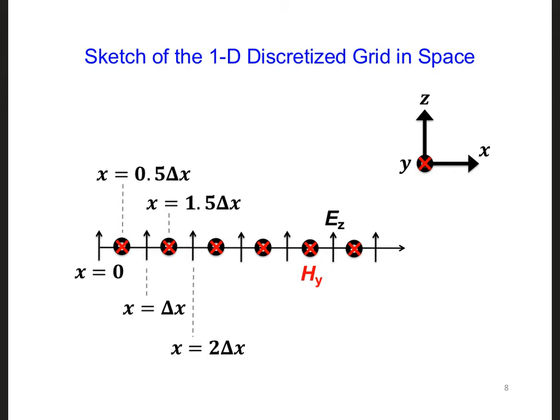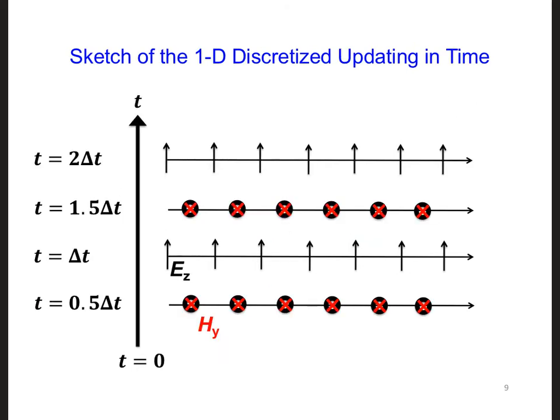Now what about in time? What does the updating look like in time? In time, we have what is called leapfrog time stepping. In this diagram, time is equal to 0 at the bottom, and time progresses as we travel up the screen.